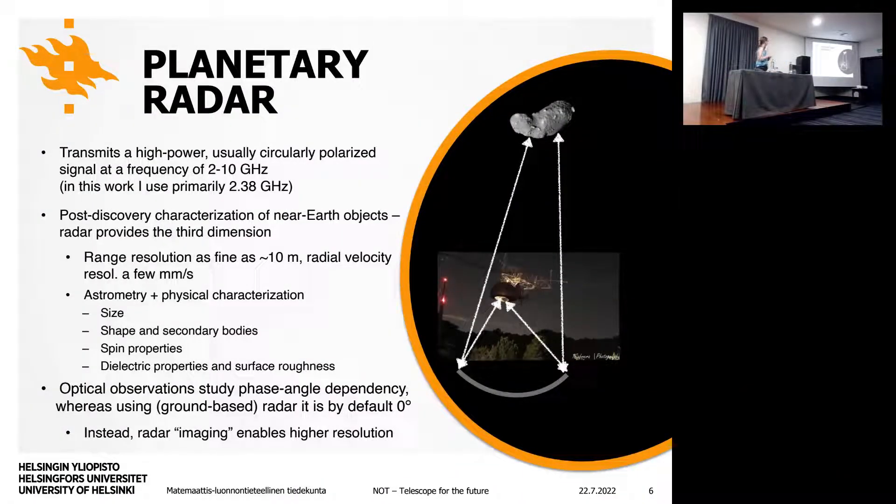This is a sort of introduction to planetary radar. Compared to optical observations, in radar you don't rely on the sunlight, you transmit your own wave. You use these very high power typically circularly polarized waves at frequency range of like 2 to 10 gigahertz. And this is post-discovery characterization. It provides a third dimension. With optical you get the coordinates on the plane of sky, and this gives you the distance. That really allows you to pin down very precisely the location. That's why the astrometry after the radar observation gives you very precise information. Range resolution can be as fine as 10 meters, more typically around 60. And you also get the radial velocity with very fine resolution of a few meters per second. And then you can also characterize sizes, shapes, spin properties, and so on.